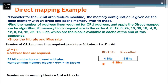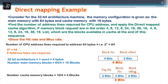For cache: 16 bytes ÷ 4 bytes per word = 4 blocks. The 6-bit address divides into: 2 bits for block offset (constant), 2 bits for cache line number (to address 4 blocks: 2^2 = 4), and the remaining 2 bits as tag bits for hit/miss detection.